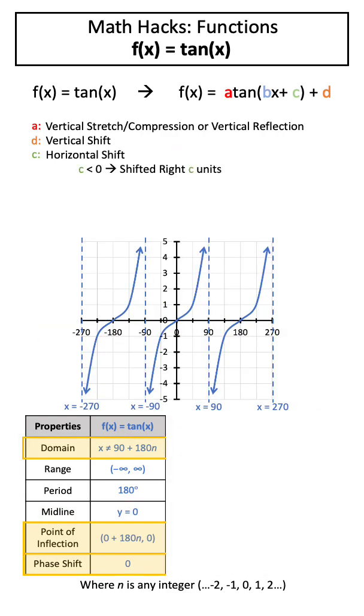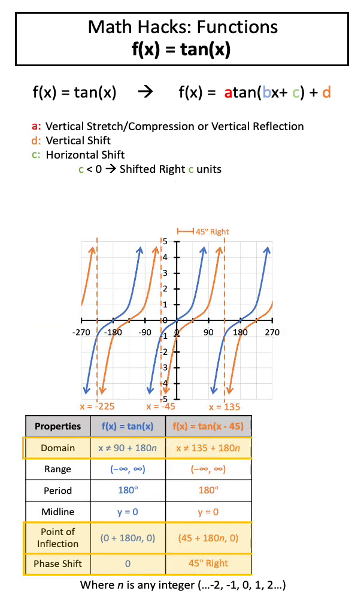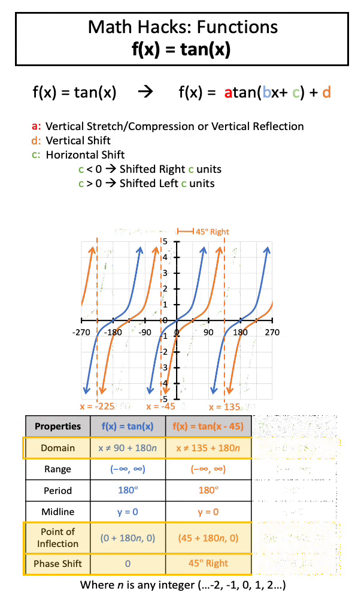If c is less than 0, this will shift our function right c units, whereas if c is greater than 0, this will shift our function left c units.